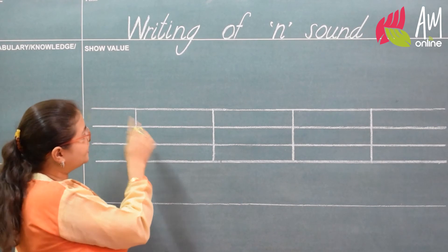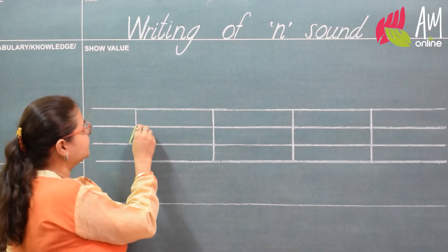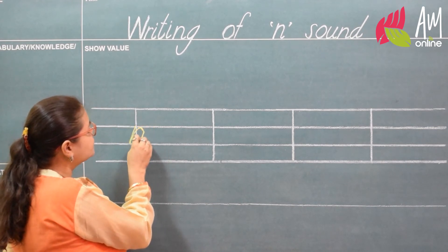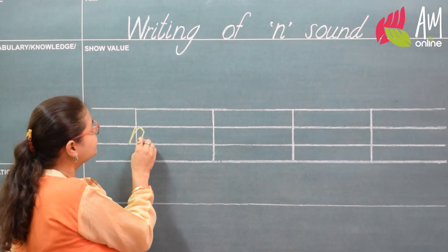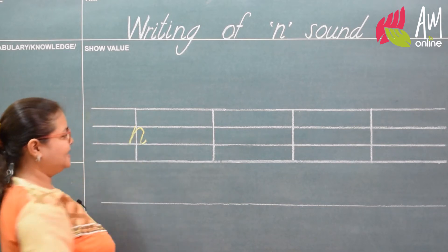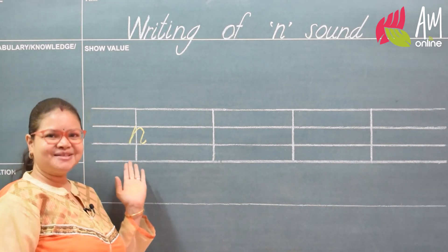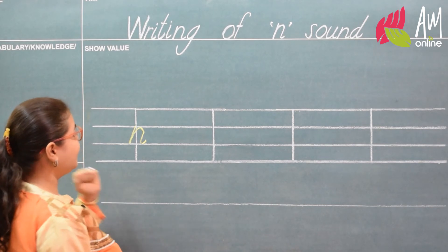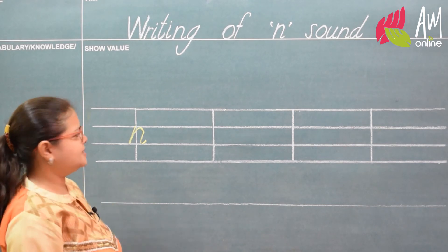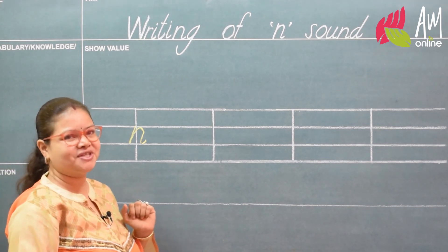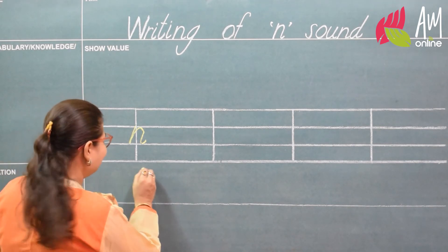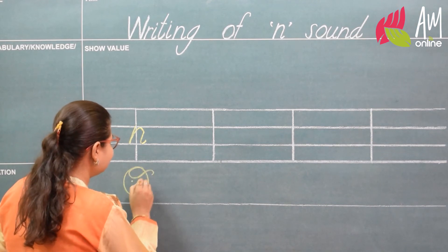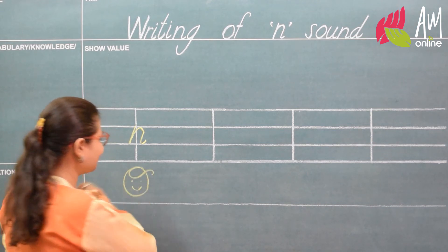Now continue it — make a roof, come down, slant, and monkey tail. This becomes our na. I can see that this is a perfect formation, so I'm going to give this a smiley face.